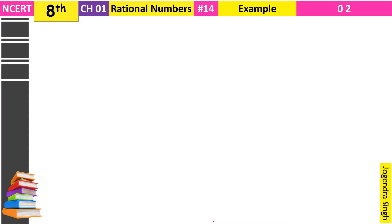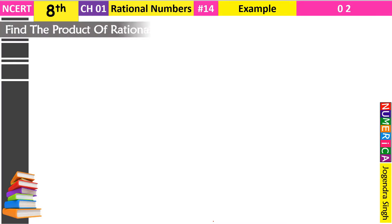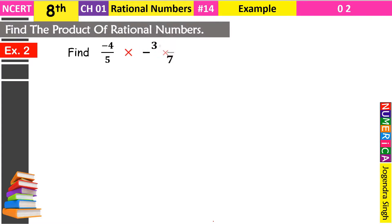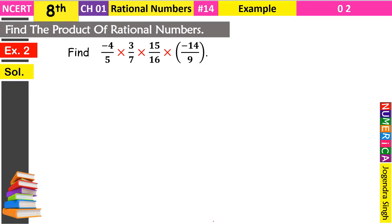Hi, this is Jogundar Singh and you are watching NCRT class 8th chapter 1 rational numbers, example number 2. This example is about how to find the product of rational numbers. Find the product of (-4/5) × (3/7) × (15/16) × (-14/9).